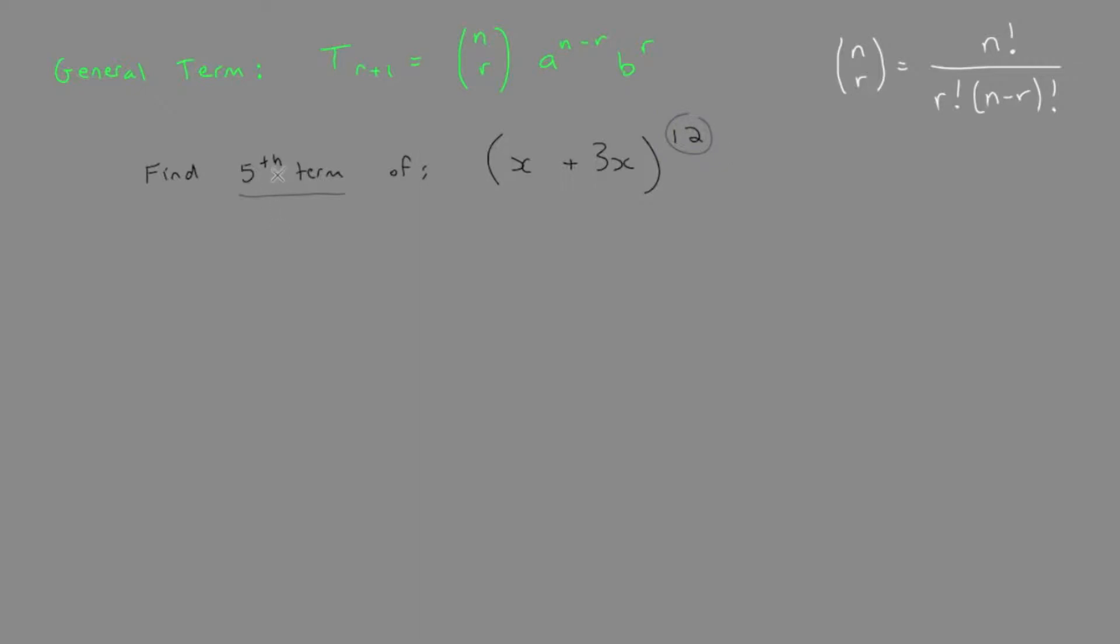If we want to find the fifth term, that means r equals 4, or 1 less than the term number. Always subtract 1 from the term number to get r.